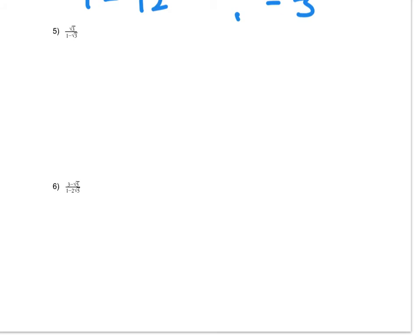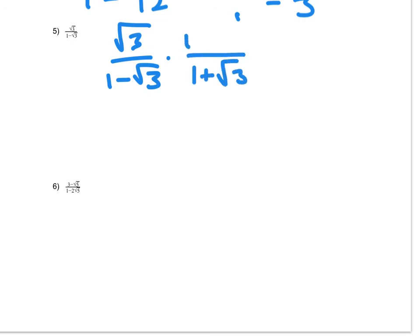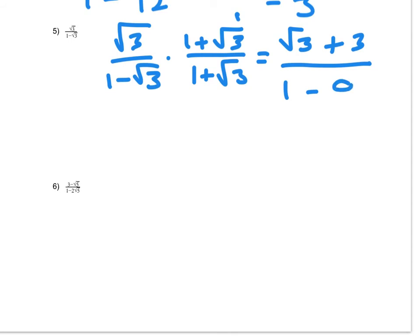Next example: root 3 over 1 minus root 3. We multiply by the conjugate of the bottom, because it's the bottom that we don't want the radical in. So we multiply by 1 plus root 3 over 1 plus root 3. Multiplying across: root 3 times 1 is root 3, and root 3 times root 3 is 3. On the bottom, first one squared minus second one squared gives us 1 minus 3, which is minus 2. So the answer is root 3 plus 3, all over minus 2.